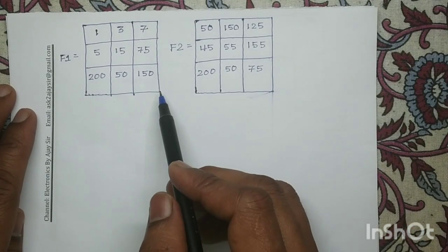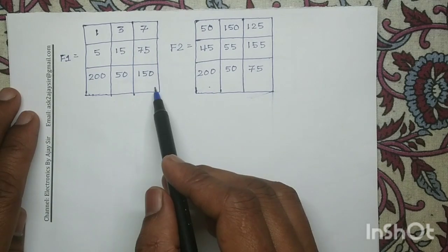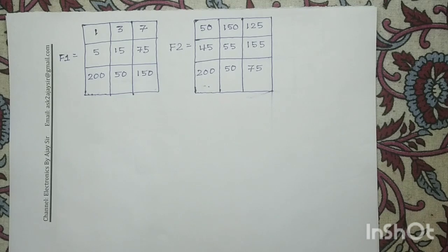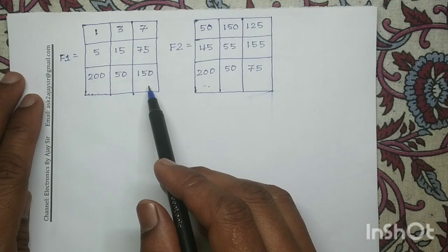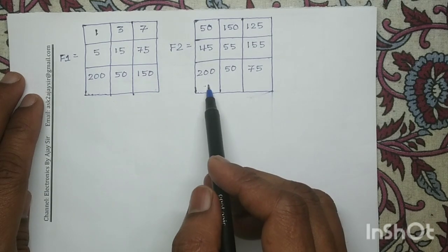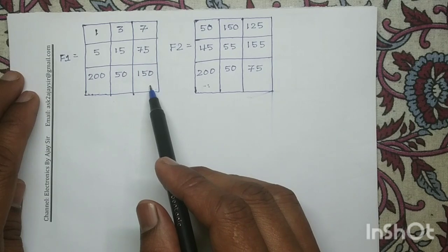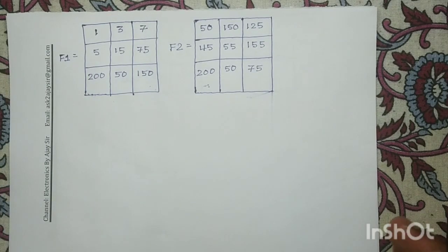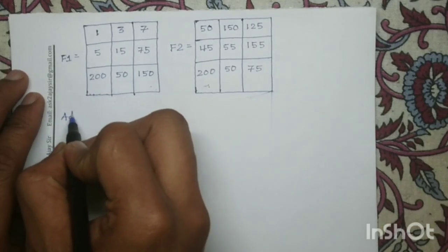These are the two images f1 and f2 given to us, both having the same dimension 3×3. In order to perform any arithmetic or logical operation, the first and mandatory condition is that the dimension of both images — f1 and f2 — must be identical. Since both dimensions are identical, we can perform the arithmetic operation. So first we will perform the addition operation.